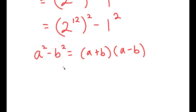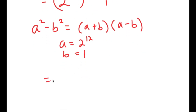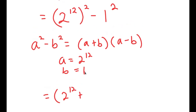So in this case, a is 2 to the power of 12 and b is 1. So I get 2 to the power of 12 plus 1, times 2 to the power of 12 minus 1.